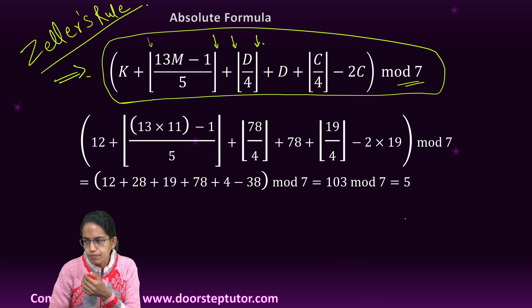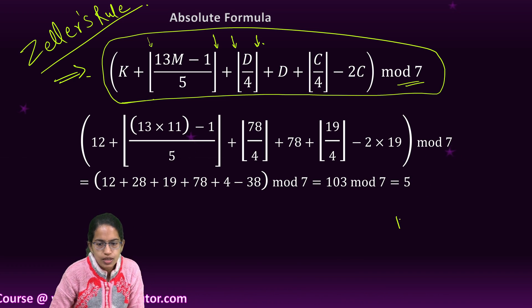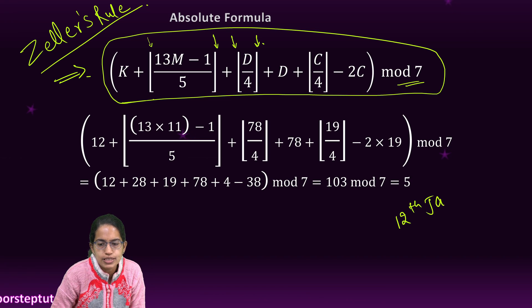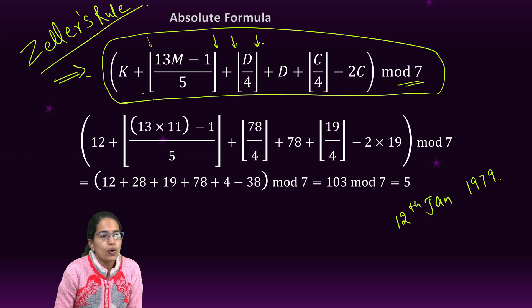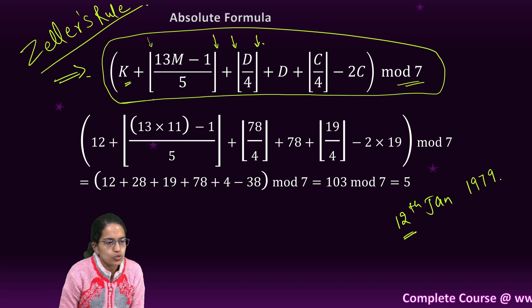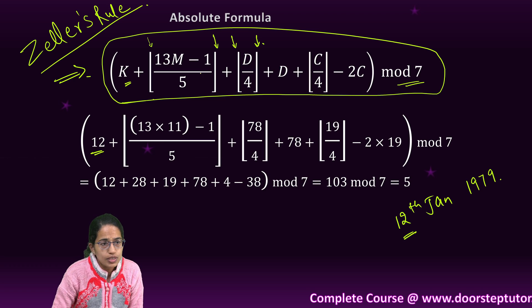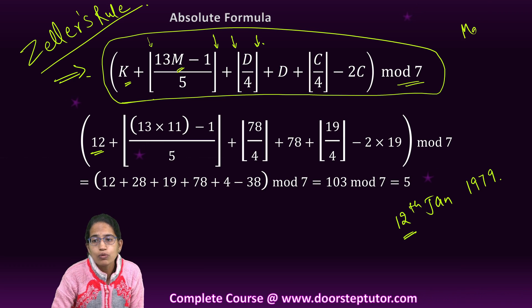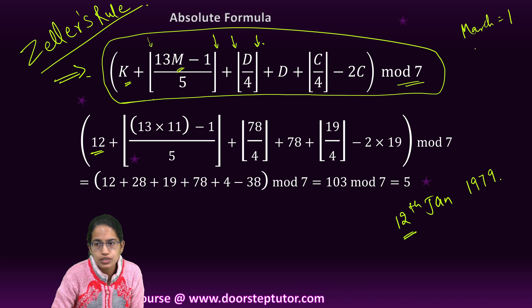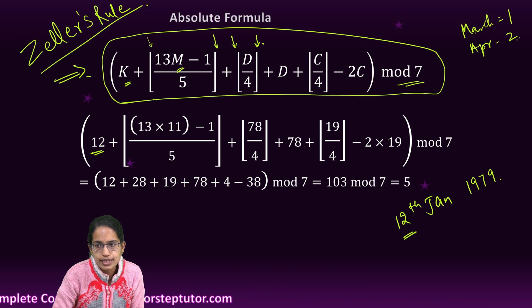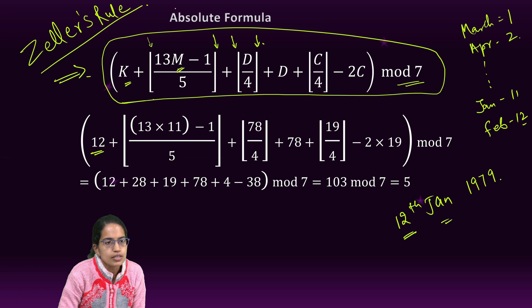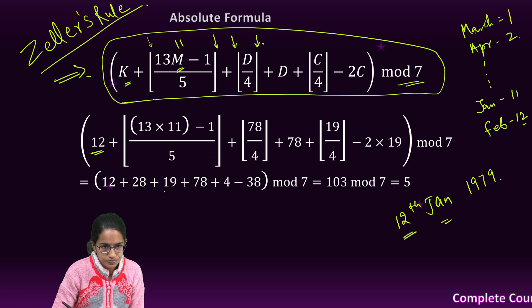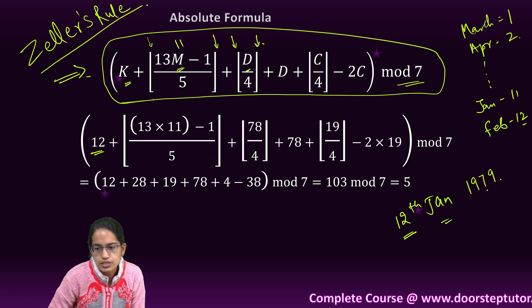Let's take a simple example: I have the day as 12th January 1979. What is K? K is this 12, so I put 12 here. What is M? M is the month. We count March as first, April as second, and so on, so January would be 11 and February would be 12. So here the month is January, so I put it as 11.